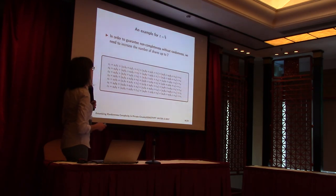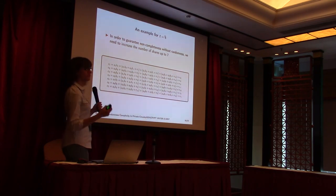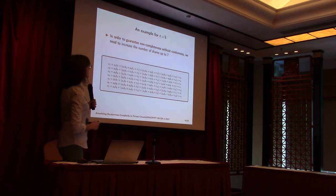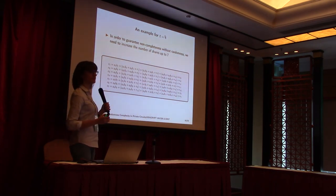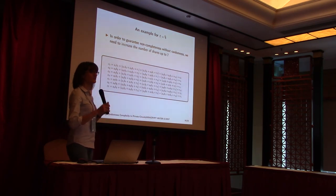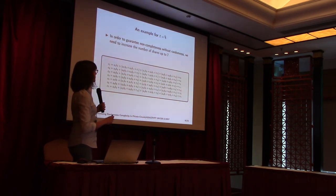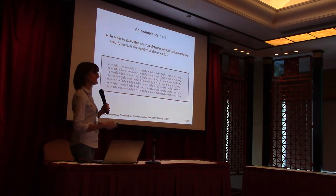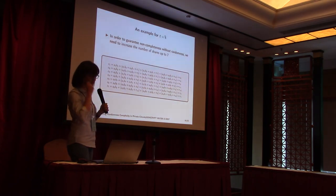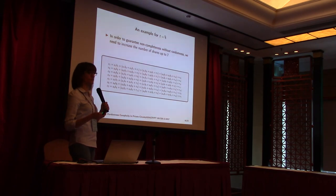Here we have an example for T equal to four. I really wanted to show this case because it's extraordinary. Guaranteeing non-completeness without randomness is not a trivial task. Up to order three we can achieve it with T+1 shares, but from order four onwards we have to increase the number of shares — for example for order four we need up to seven shares. I'll now briefly show you why the properties I described work.